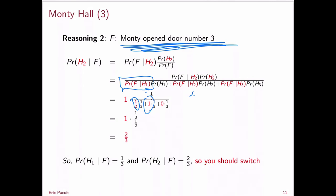Performing the correct calculations: P(H1 | F) = (1/2 × 1/3) / (1/6 + 1/3) = (1/6) / (1/2) = 1/3. And P(H2 | F) = (1 × 1/3) / (1/2) = 2/3. So, properly applied, Bayes' Theorem tells us the probability of the car being behind door two is two-thirds, while the probability of it being behind door one is only one-third. You do, in fact, have an incentive to switch.